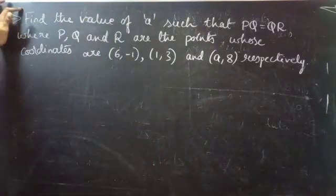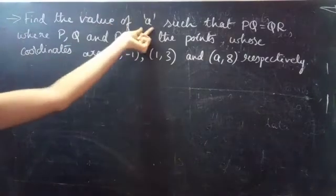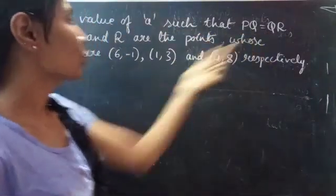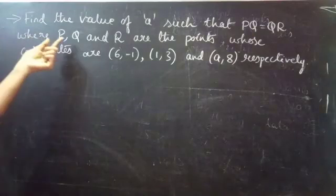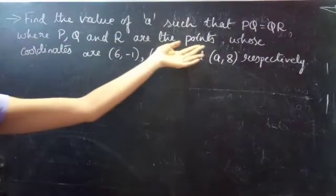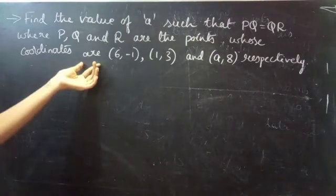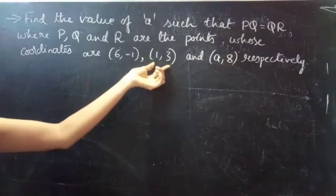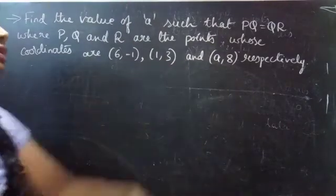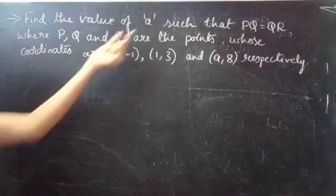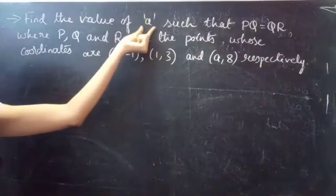Find the value of A such that PQ equals QR, where P, Q and R are the points whose coordinates are (6, -1), (1, 3) and (A, 8) respectively. So here we have to find the value of A.